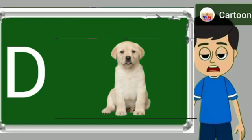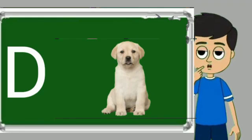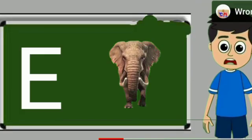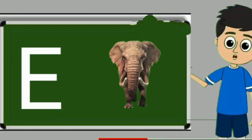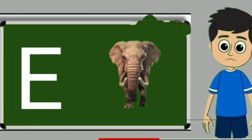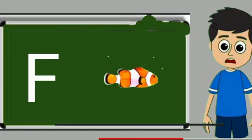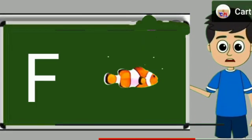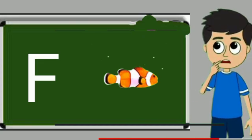D for dog. Dog means kutta. E for elephant. Elephant means hathi. F for fish. Fish means machli.